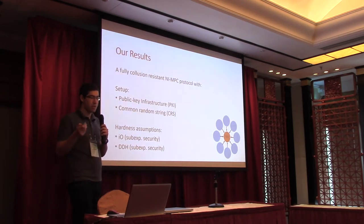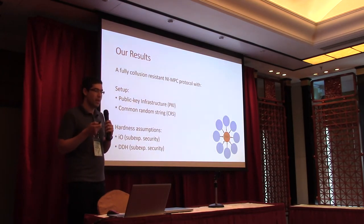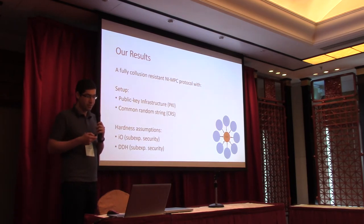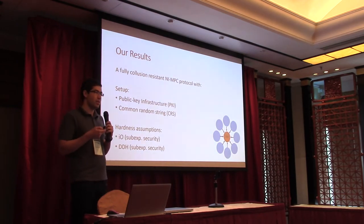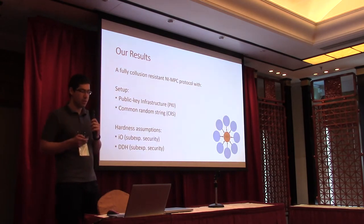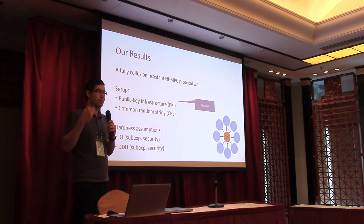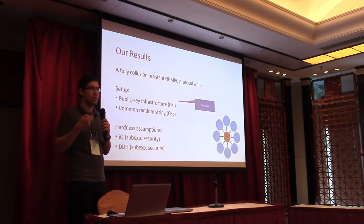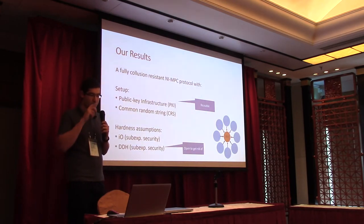We almost completely answered this question. We show a protocol which is fully collusion-resistant — any number of players can collude with the adversary. The setup we need is a PKI, which I said is necessary, and also a CRS (common random string, not reference string). The hardness assumptions we require are iO, which is necessary, and DDH (decision Diffie-Hellman) with some exponential security. The PKI we have is reusable, so we can reuse it over multiple sessions of the protocol. Getting rid of the DDH assumption is an open question which I think is very interesting.